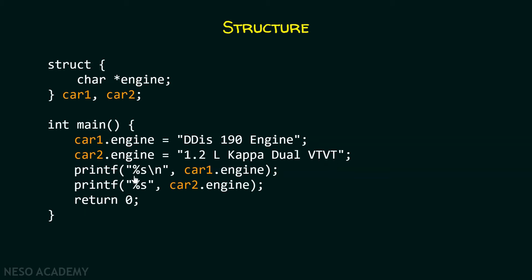Then after that, we can print them on the screen. And obviously, this has to be %s and this also has to be %s. As we can see here, this is car star engine and it must consist of a string literal. In order to print the string literal, we must have this placeholder. So, the output of this program we can clearly see is DDIS 190 Engine and 1.2 L Kappa Dual VTVT.